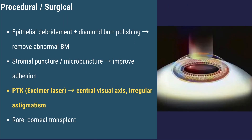Then we have phototherapeutic keratectomy. This is an option when erosions involve the visual axis, using the excimer laser. For erosions in the visual axis, mechanical treatment is imprecise, so phototherapeutic keratectomy is more accurate and can selectively ablate the abnormal superficial basement membrane and microcysts while preserving the underlying stroma, resulting in a smoother corneal surface, reduced irregular astigmatism, and improved vision.